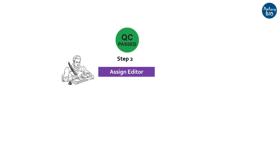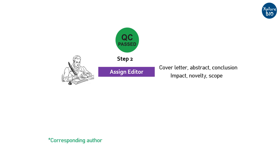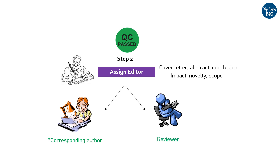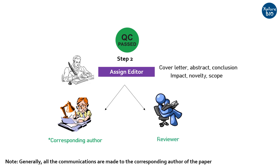The editor takes the initial decision on whether the paper is suitable for the journal or not. The editor mostly relies on the cover letter, abstract, and conclusion of the paper. The editor also looks at whether the paper is impactful, novel, and falls under the scope of the journal. The editor also coordinates between the authors and the reviewers. Remember that mostly only the corresponding author receives all these notifications through email.